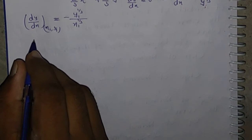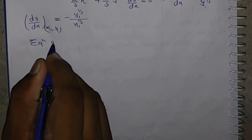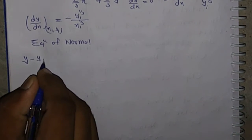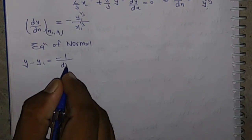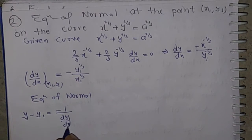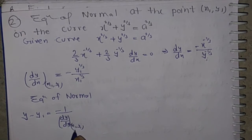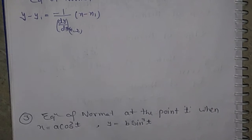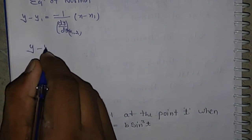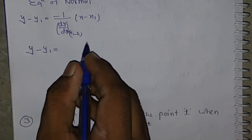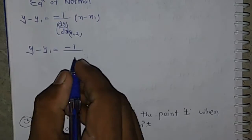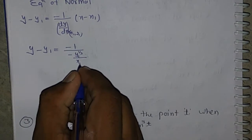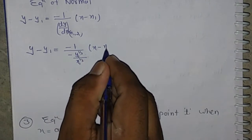Now the equation of the normal is given by y - y1 = -1/(dy/dx) * (x - x1), i.e., minus 1 by the slope of the tangent at (x1, y1). Substituting the value of dy/dx: y - y1 = -1/(-y1^(1/3)/x1^(1/3)) * (x - x1).